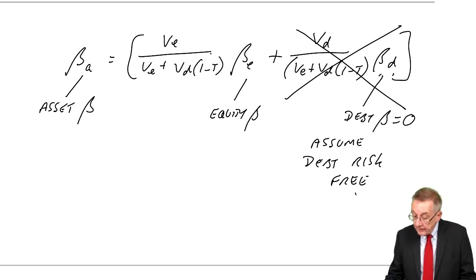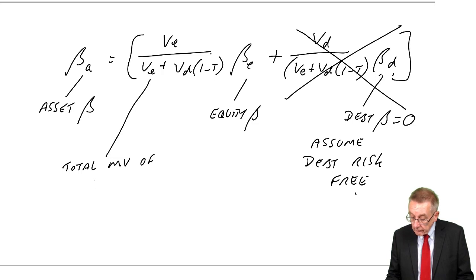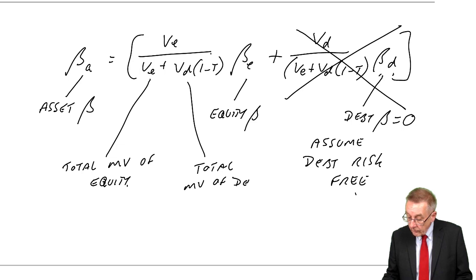VE is the total market value of equity. VD is the total market value of the debt in the company. And T is the tax rate.